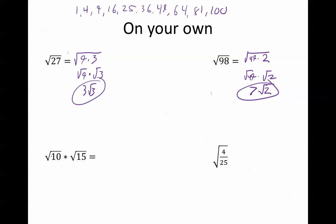This third one here, root 10 times root 15, is the same thing as root 10 times 15, which is root 150. Now let's simplify it. Does 100 work? No. 81? No. 64? No. 49? No. 36? No. 25? Yes. 25 goes into 150 six times, so this is root 25 times root 6. And root 25 we know is 5, so that's 5 root 6 as our solution.